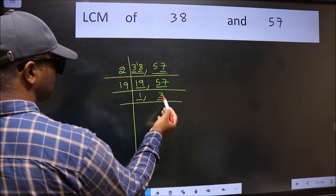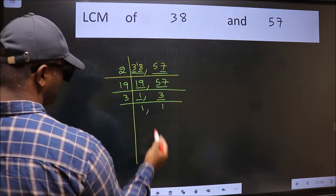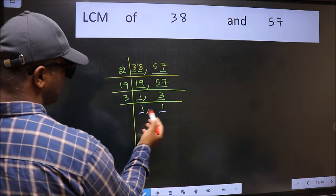So focus on the next number 3. 3 is a prime number, so 3 times 1 is 3. So we got 1 in both places.